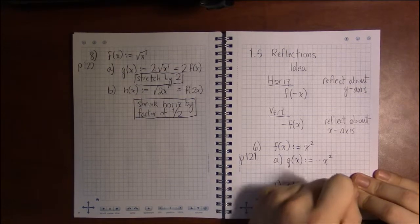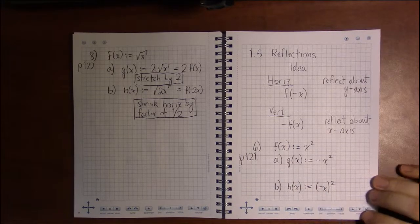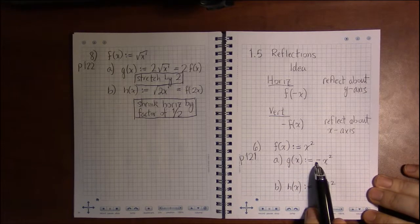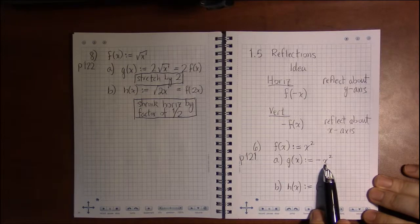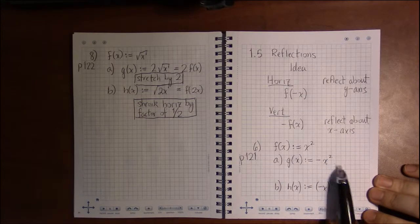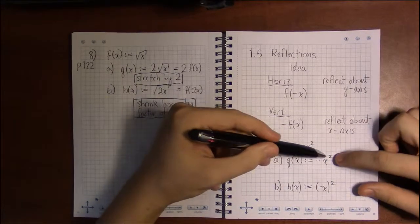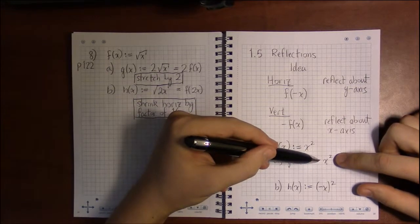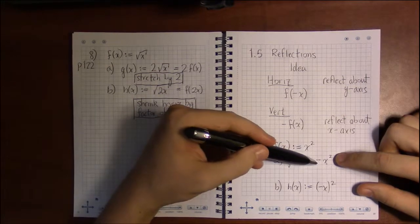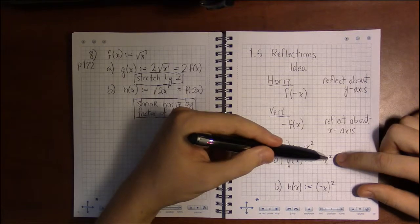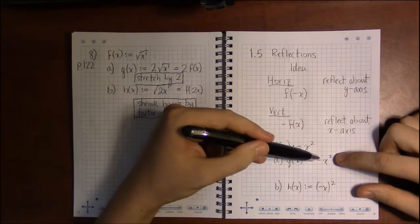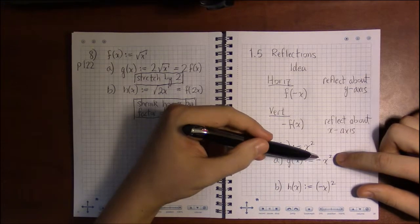We have parentheses minus x, then squared. So in a sense, the exponent comes first because this minus is multiplication by minus one, and exponents come first, so the negative isn't going to come first. It isn't as close as it could be to the x.